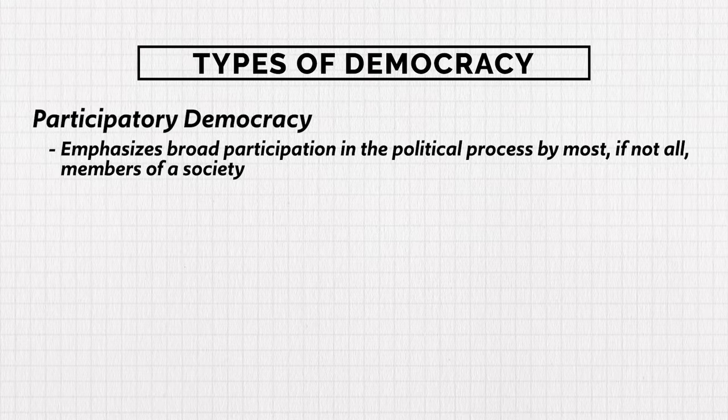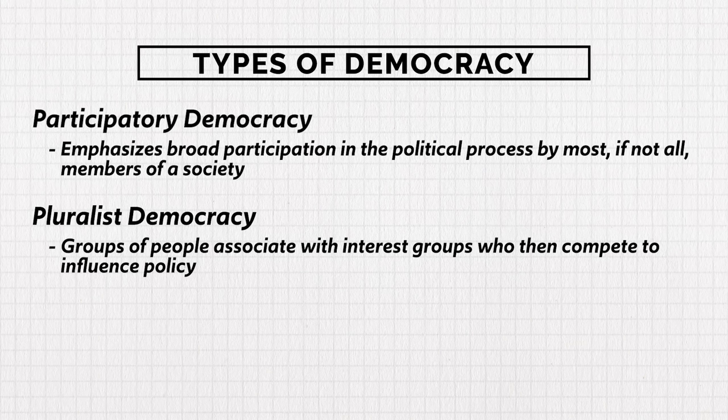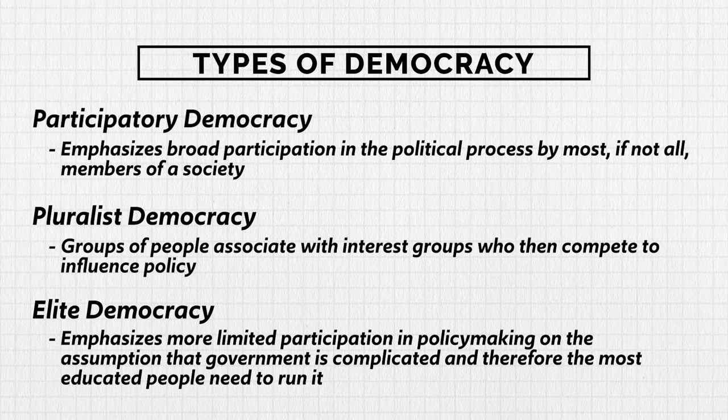Now let's talk about the three main kinds of democracy present in our system today: participatory, pluralist, and elite. Participatory democracy emphasizes broad participation in the political process by most, if not all, members of society. Pluralist democracy is a model in which groups of people associate with interest groups that compete to influence public policy, giving people a voice in chunks rather than individually. Elite democracy emphasizes more limited participation on the assumption that government is complicated and therefore the most educated people need to run it.